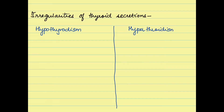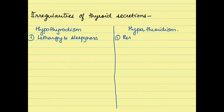Now let us see some of the symptoms of hypo and hyperthyroidism. Since the thyroid gland is responsible for the basal metabolic rate of our body, if there is less thyroid hormone it results in lethargy and sleepiness. In contrast, if there is more, it results in restlessness and insomnia, that is lack of sleep.